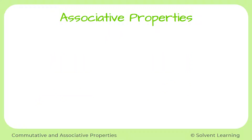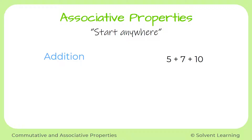Next, we'll look at the associative properties. The associative properties tell us that when we're adding or multiplying a bunch of numbers together, we can start anywhere. So our first example will be for addition. If we want to find the total sum of the numbers 5, 7, and 10, we can start by adding the 5 and 7 first, or we can start by adding the 7 and 10 first. It doesn't matter where we start — we'll still get the same answer in the end.